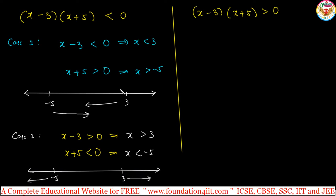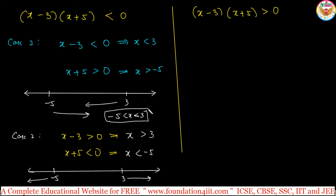So the only solution set is x between minus 5 and 3: x is greater than minus 5 and less than 3. Together we write minus 5 less than x less than 3. Depending on whether the domain is natural numbers, integers, or real numbers, we can represent this on the number line.